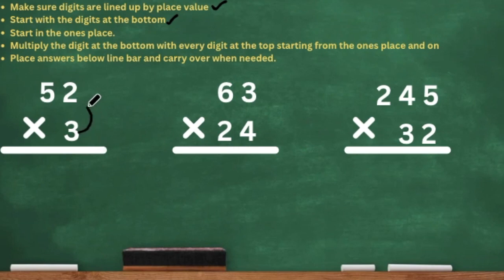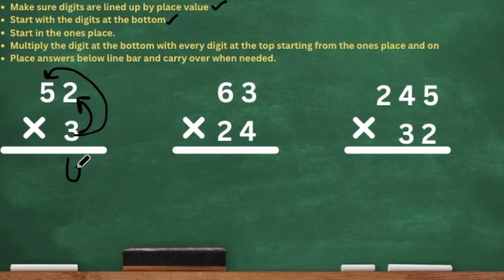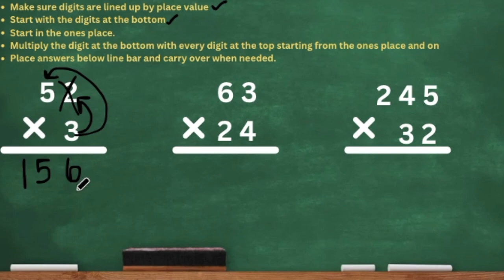So we see that we have a 3, and we're going to multiply that by the 2. Three times 2 is 6, so we're going to put our 6 right here in the ones place. We did 3 times 2, which is 6, so we're done with the 2 — we're going to cross the 2 out because we already multiplied the 3 by the 2. Next we're going to do 3 times 5, which is 15. So we're going to put the 15 right underneath it. The 6 belongs to 3 times 2, and the 15 belongs to 3 times 5. Wasn't that easy?